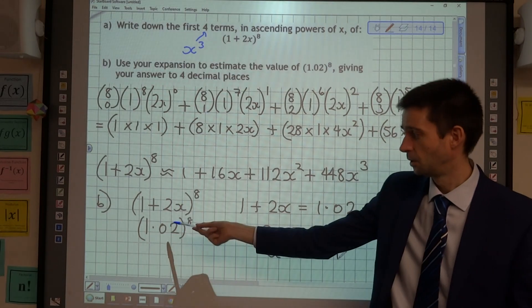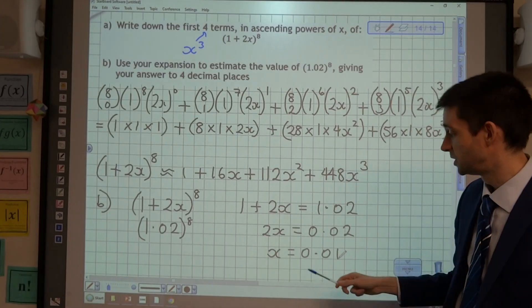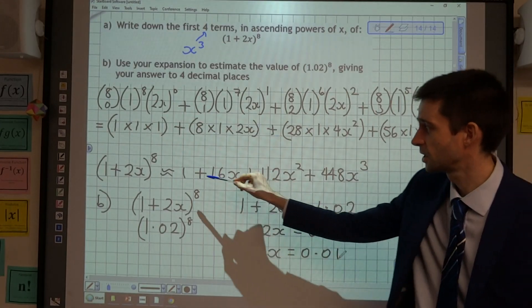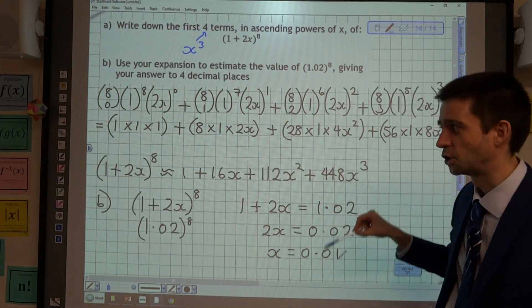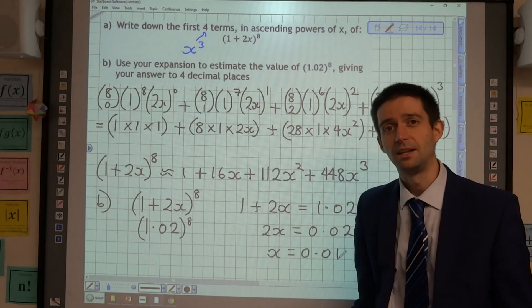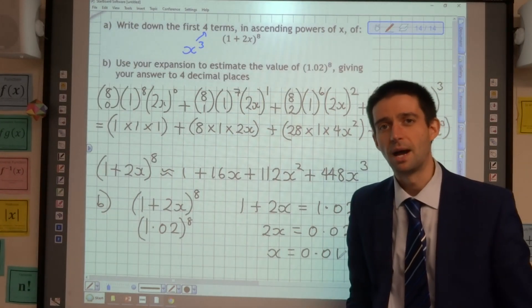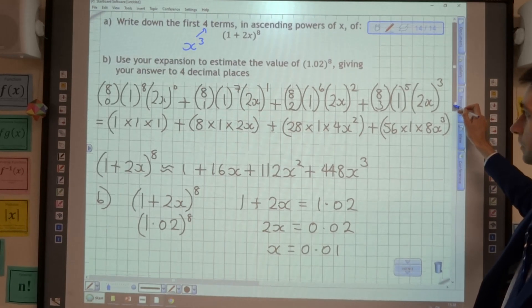So that is the value of x that we need to use, and what I need to do is to substitute this value of x into the terms of my expansion, and that will give me an approximate value of (1.02)^8. So here we go.